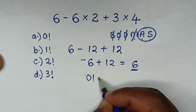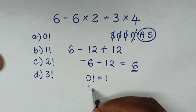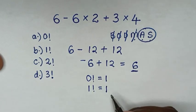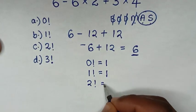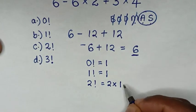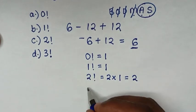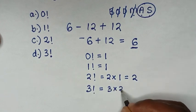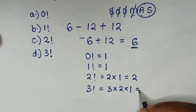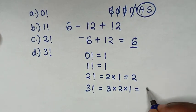Now, 0 factorial is equal to 1, and 1 factorial is equal to 1, and 2 factorial is equal to 2 times 1, which is 2. And 3 factorial is equal to 3 times 2 times 1, which is equal to 3 times 2 is 6, 6 times 1 is 6.